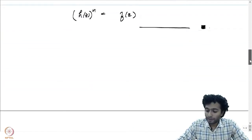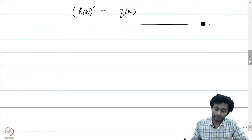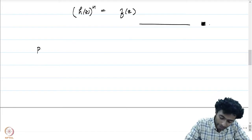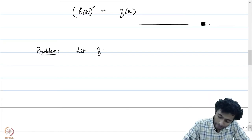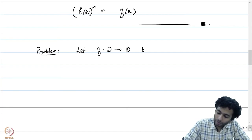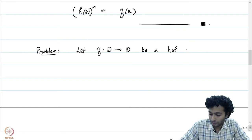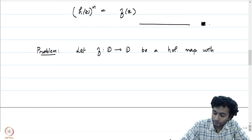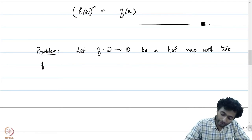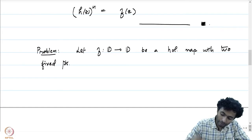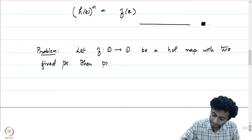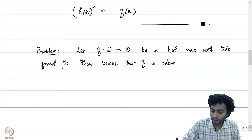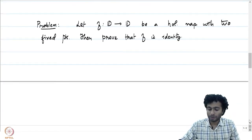The next problem is a simple and nice application of Schwarz's Lemma. The problem concerns holomorphic self-maps of the unit disk. Let f: D → D be a holomorphic map with two fixed points. Then prove that f is necessarily the identity map — there cannot be two fixed points.